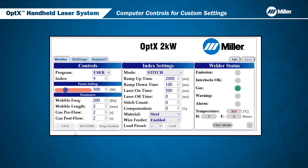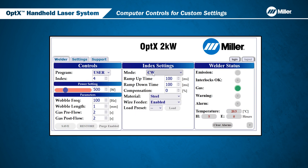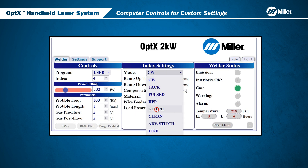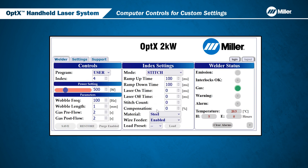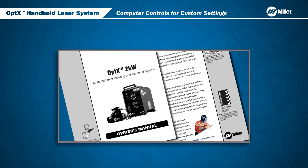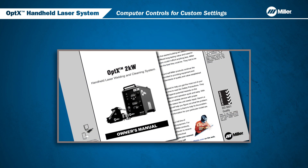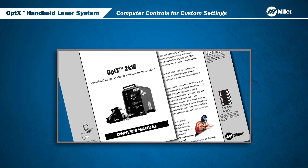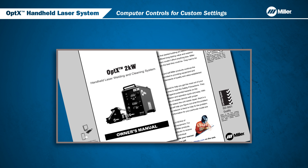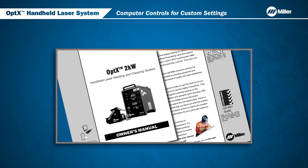To restore the previous settings, click on the Restore button. Now you can see the Stitch Mode parameters have been restored. For your convenience, more information on particular parameters can be found in the Owner's Manual.